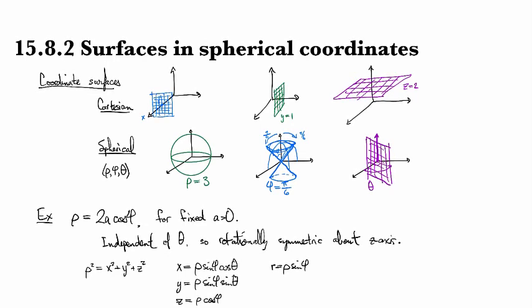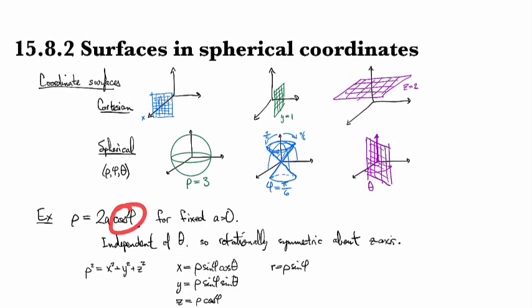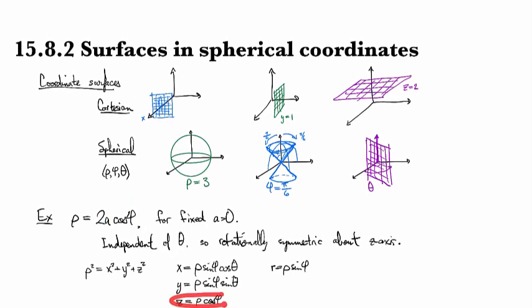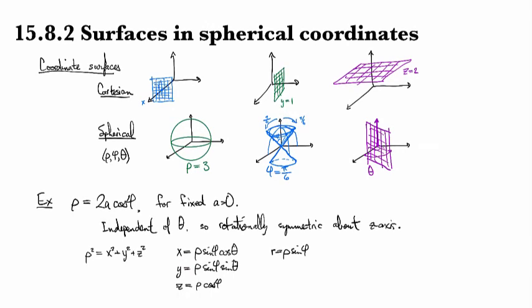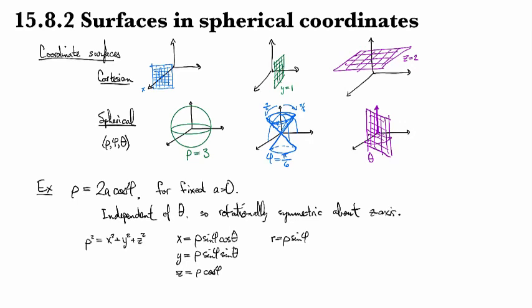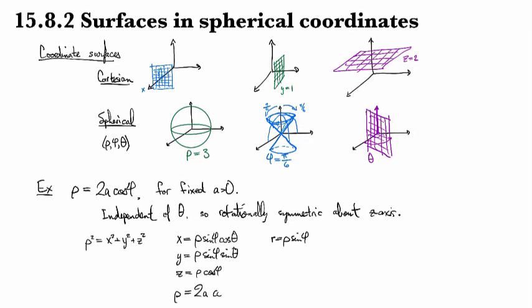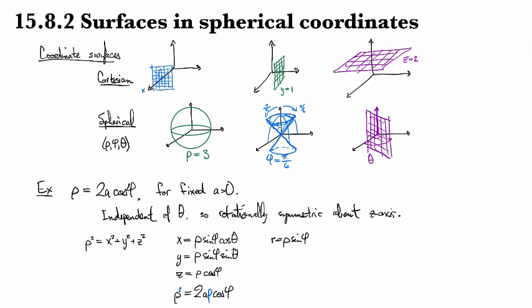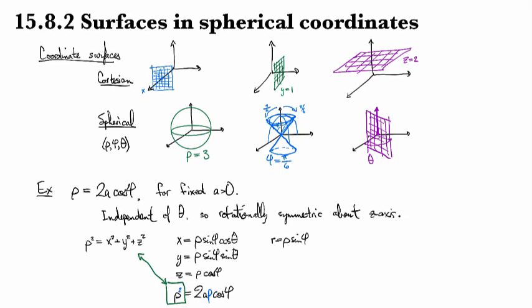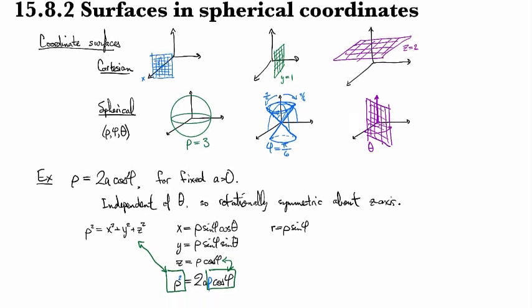We've got a cosine of phi with no thetas, and the same is true for z over here. What is the difference between these two? Well, z has a rho, and the one we're looking at does not. But as is often the case with math, if it don't fit, force it. So if I just multiply this across by rho, things get a lot nicer in a hurry. Now I can start making substitutions.